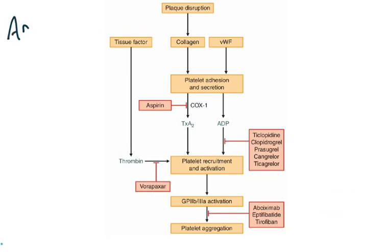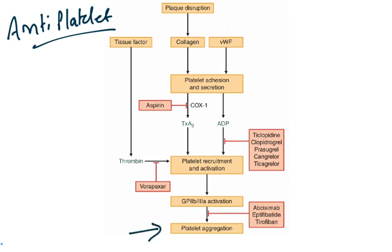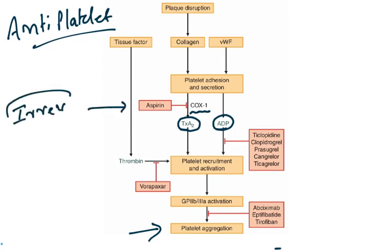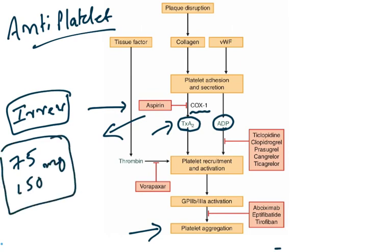Now let us see anti-platelet drugs. Thromboxane A2 is formed with the help of an enzyme called cyclooxygenase, and this enzyme is inhibited by aspirin. Aspirin irreversibly inhibits cyclooxygenase enzyme, which inhibits the formation of thromboxane A2 and further activation will not occur. Aspirin is a major anti-platelet drug, usually given at a dose of 75 to 150 mg. Most cardiac patients take this drug to prevent platelet aggregation, as platelet aggregation is the major reason for unstable angina, and may completely block a blood vessel resulting in myocardial infarction.